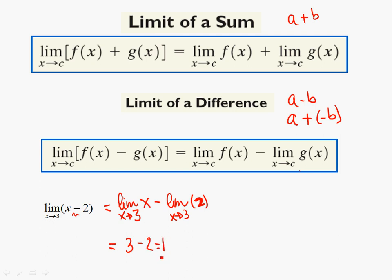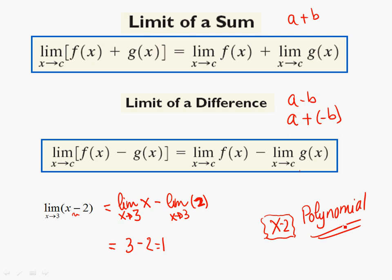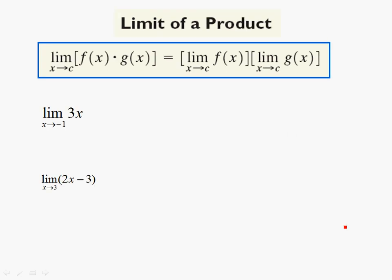We'll see in a little bit that you can do that one much faster. Because x minus two can be qualified as what kind of function? If you had to give x minus two a comprehensive name, what would that be? Other than linear? We'll learn a rule for polynomial functions because you don't need to split it for polynomials — but you do need to split it for certain other types.